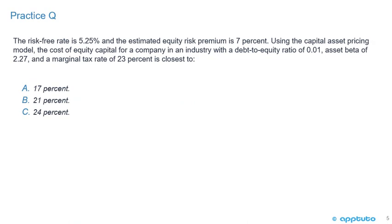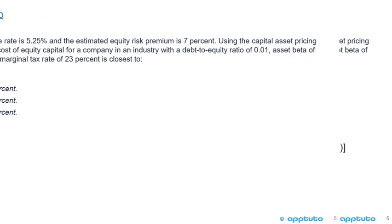Now for a practice question. The risk-free rate is 5.25% and the estimated risk premium is 7%. Using the Capital Asset Pricing Model, the cost of equity for a capital project in an industry with a debt-to-equity ratio of 0.01, an asset beta of 2.27, and a marginal tax rate of 23% is closest to: A) 17%, B) 21%, or C) 24%?